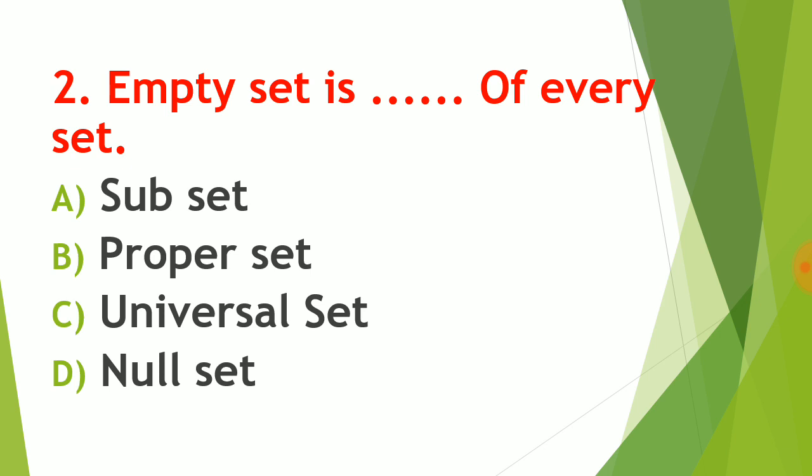Question number two: empty set is blank of every set. The options are: A) subset, B) proper set, C) universal set, D) null set. The correct answer is A, subset. Empty set contains no element, so this set is a subset of every other set.